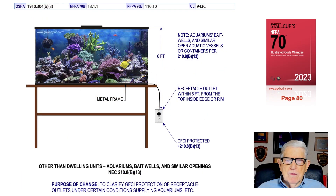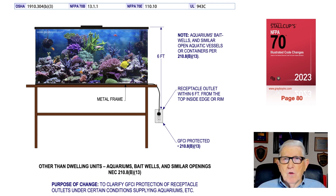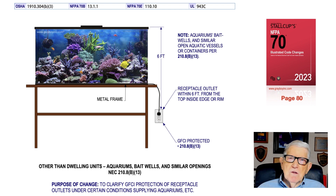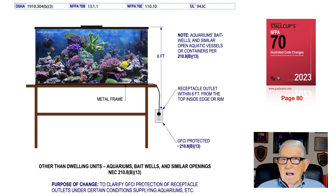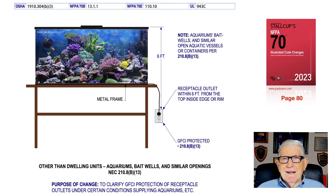This illustration deals with other than dwelling units — aquariums, bait wells, and similar openings declared as such by the authority having jurisdiction in accordance with 90.4. Aquariums, bait wells, and similar open-type vessels are outlined in 210.8 B13. If a receptacle is located within six feet of the inside edge of the rim, GFCI protection is required in accordance with 210.8 B13, found on page 80 of the NEC.